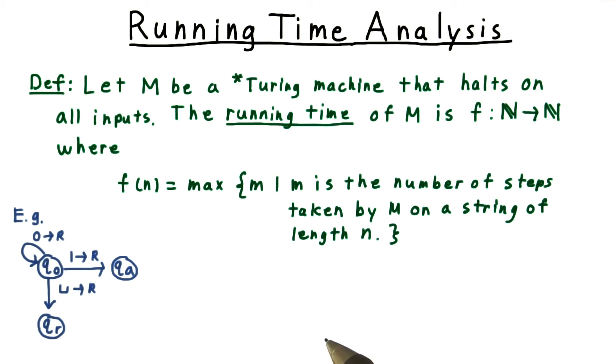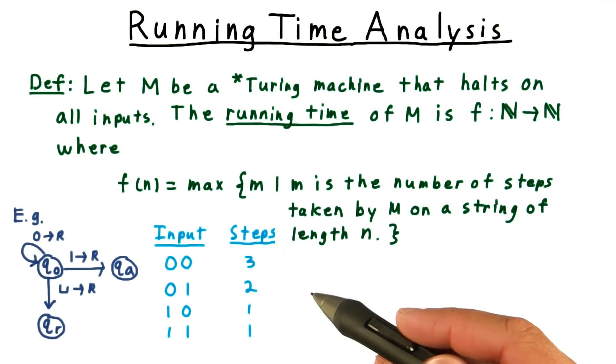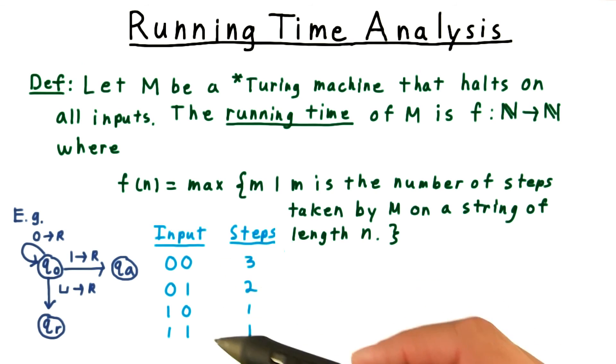Let's figure out the running time for a string of length 2. We need to consider all possible strings of length 2. So we'll make a table like this and count the number of steps. The largest number of steps is 3.